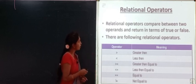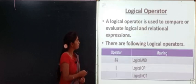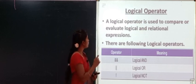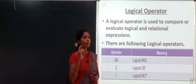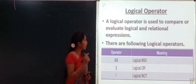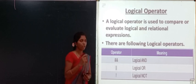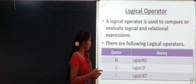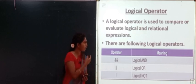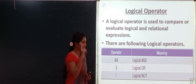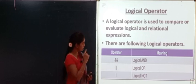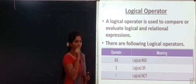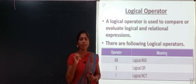The third one is the logical operator. A logical operator is used to compare or evaluate logical and relational expressions. The logical operators are: double ampersand (&&) for logical AND, double slash (||) for logical OR, and exclamation mark (!) for logical NOT.